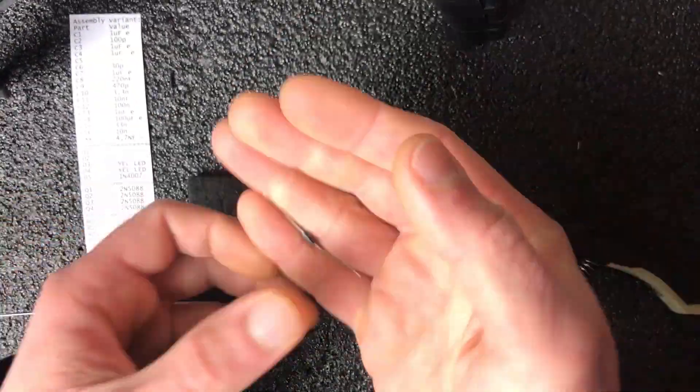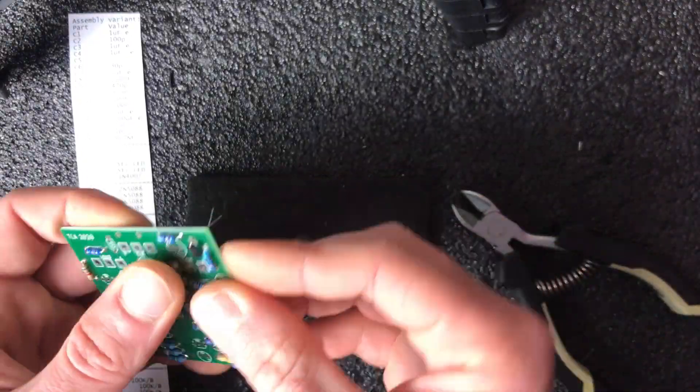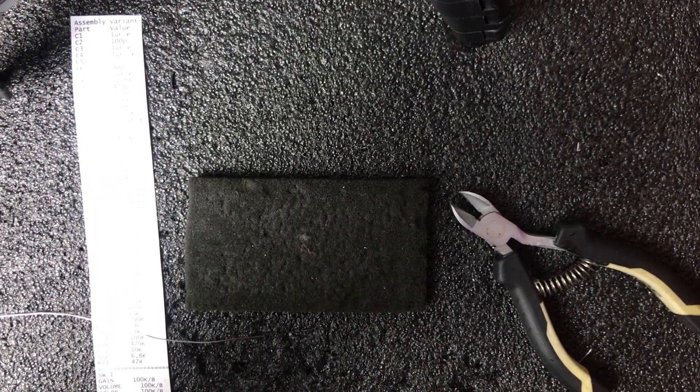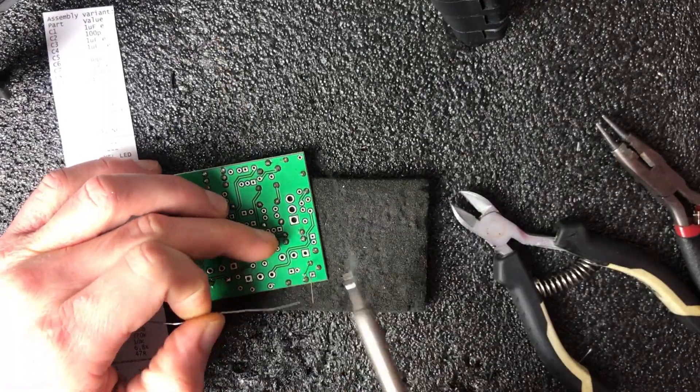So when I'm using solder with lead I usually go with 350-360 degrees of Celsius scale. And with leadless I usually use 380-390 and sometimes much more when I'm soldering big parts.